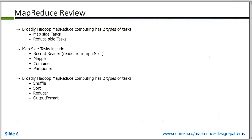Looking at the shuffle side: once the partitioner has done the partitioning on the data collection coming out of the mapper, it puts that data onto the local disk on the mapper side. Then the reducer for which the data is meant actually pulls that data onto its own machine. Then you have the sort phase — after the shuffle, the sort happens. On the reducer side, based on the keys, the data is sorted before being input to a reducer.